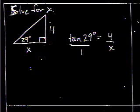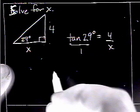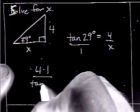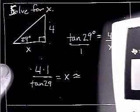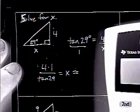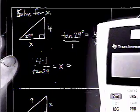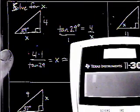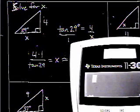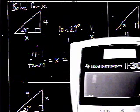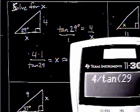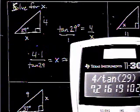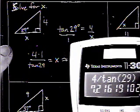If you know anything about proportions, the only way to solve a proportion is to cross multiply. So, we have 4 times 1 divided by tangent 29 is equal to x. Let's see if we can get this on screen here. 4 divided by tangent 29 is 7.2 approximately.